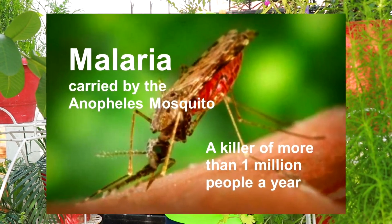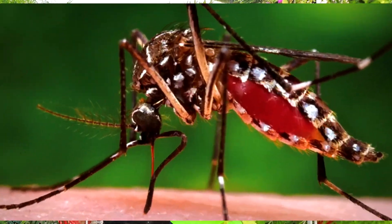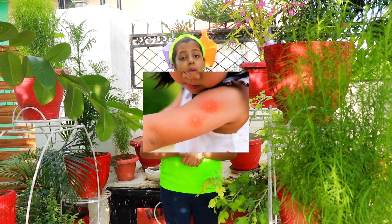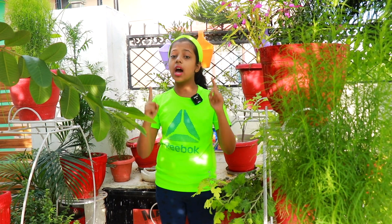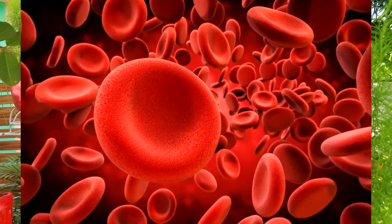Diseases spread by mosquitoes: malaria is spread by the Anopheles mosquito, and dengue is spread by the Aedes mosquito. Only female mosquitoes bite us because they need to lay eggs, and they need nutrition for that. Nutrition is easily available in human blood, which is why female mosquitoes suck human blood.